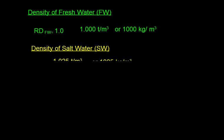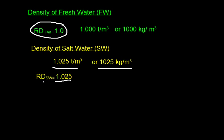In contrast, density of salt water is 1.025 ton per cubic meter, or 1025 kg per cubic meter. Relative density is 1.025, because 1.025 divided by 1 will give you RD of 1.025.